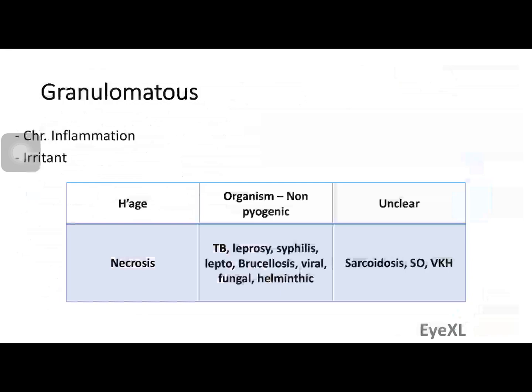Granulomatous uveitis is a chronic inflammation — the history spans months or even years. An irritant — such as hemorrhage in the anterior or posterior chamber, vitreous hemorrhage, or necrotic tissue — sustains the reaction. Non-pyogenic organisms causing granulomatous uveitis include tuberculosis, leprosy, syphilis, and leptospirosis. Certain viral, fungal, or helminthic infections, though very rare, also tend to present as granulomatous rather than non-granulomatous uveitis.